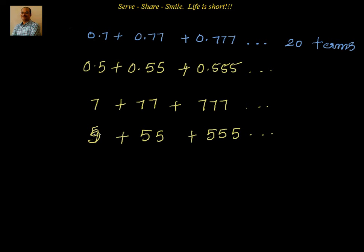What we are going to do is take the number which is common in all of the terms and take it outside. Then we will multiply and divide by 9, and convert the expression into a geometric progression combined with some other terms. This is the logic we will follow.